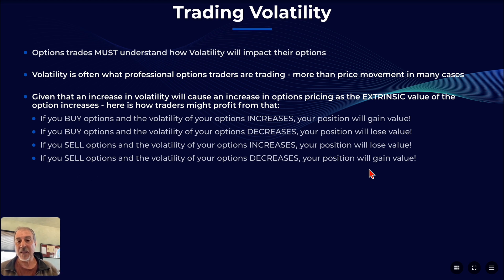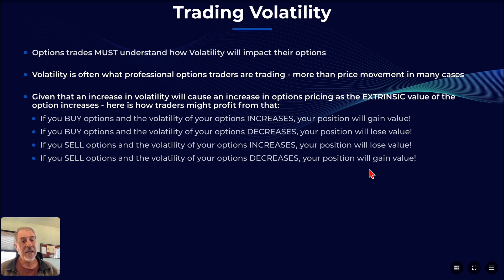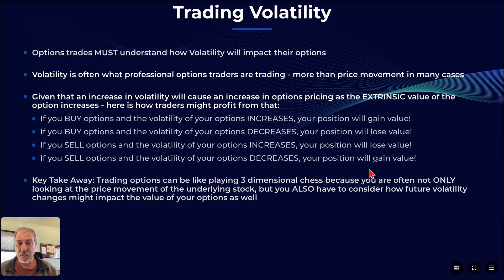If you buy options and the volatility of your options increases, your position is going to gain in value. If you buy an option and the volatility of your option decreases or shrinks up, your position is going to lose some value. If you sell an option — which is what many options traders do — and the volatility of your option increases, that's not going to be good for you. But if you sell options when volatility is high and then that volatility decreases or shrinks up, your position is going to gain in value. A takeaway here is that trading options is like playing three-dimensional chess in some cases, because you're often not only looking at the underlying price movement to make money, but you also have to consider how future volatility changes might impact your options position as well.